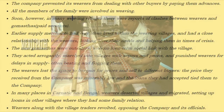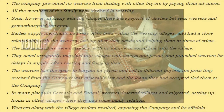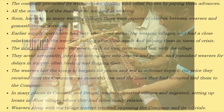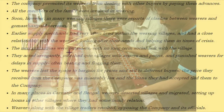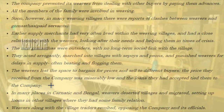The company prevented its weavers from dealing with other buyers by paying them advances. All members of the family were involved in weaving. Soon, however, in many weaving villages there were reports of clashes between weavers and gomassas — the company's paid servants. Earlier, supply merchants had very often lived within weaving villages and had a close relationship with the weavers, looking after their needs and helping them in times of crisis. The new gomassas were outsiders with no long-term social link with the village. They acted arrogantly, marched into villages with sepoys and peons, and punished weavers for delays in supply, often beating and flogging them. The weavers lost the space to bargain for prices and sell to different buyers. The price they received from the company was miserably low, and the loans they had accepted tied them to the company.